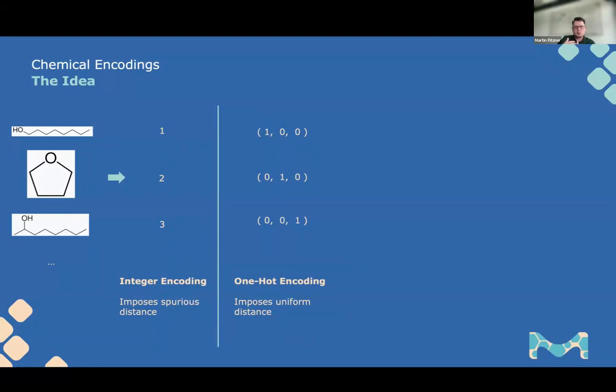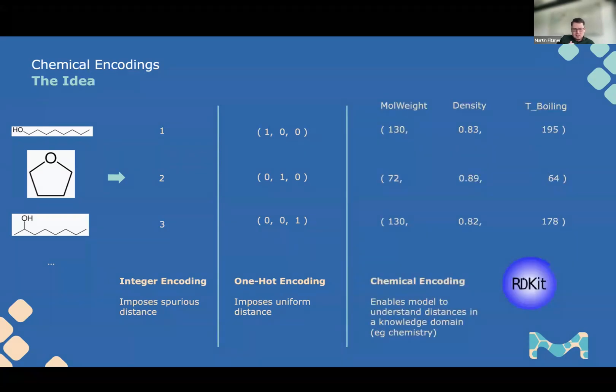If you do an integer encoding, you would just give each of these labels or graphs or pictures a number and then your tabular machine learning can work with that. The problem here is pretty obvious. If we integer encode them, there are some spurious distances and ordering. The first and the third solvent are further apart in this encoded integer space than the first and the second one. While anyone, even if you have never heard of the word chemistry, can appreciate that the first and the third solvent are more similar than the first and the second one. But the ordering due to the encoding has done the opposite.